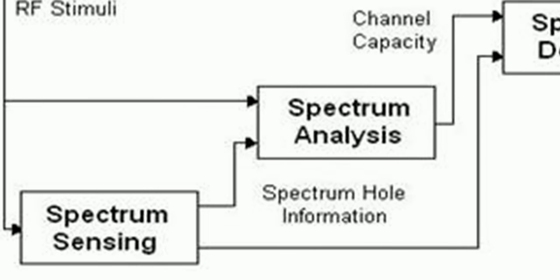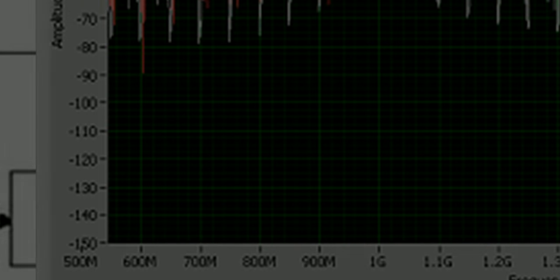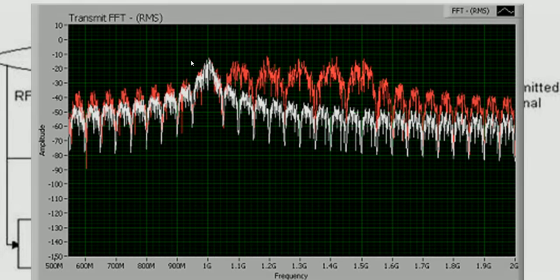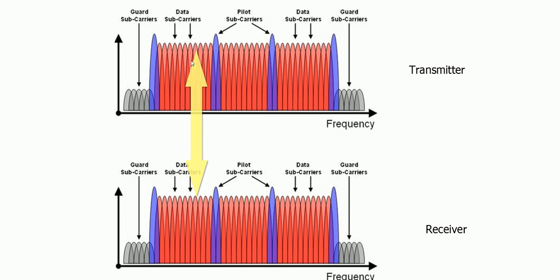In case there is an immense amount of interference or many of the transceivers are tuned to the seventh subcarrier causing it to be jammed, then a cognitive radio transceiver has the ability to check which subcarriers are free and then automatically tune to that free subcarrier.